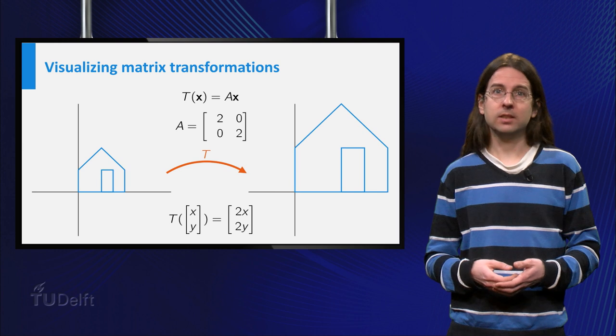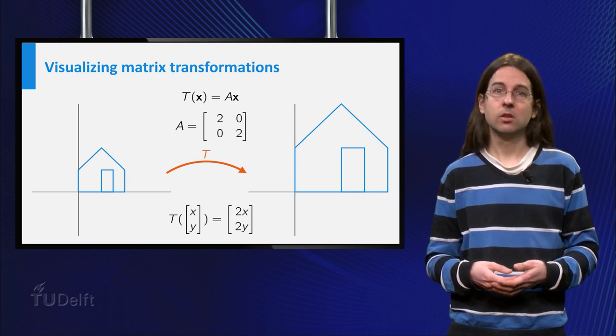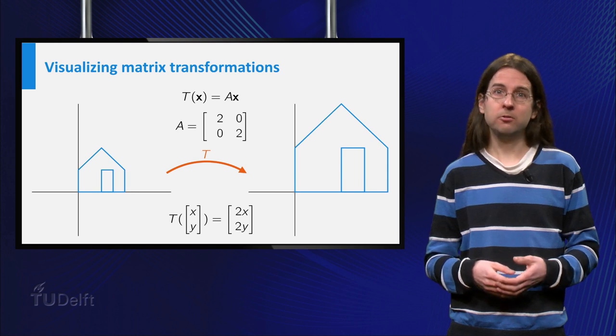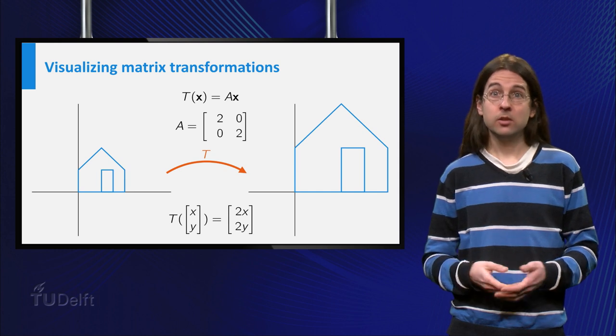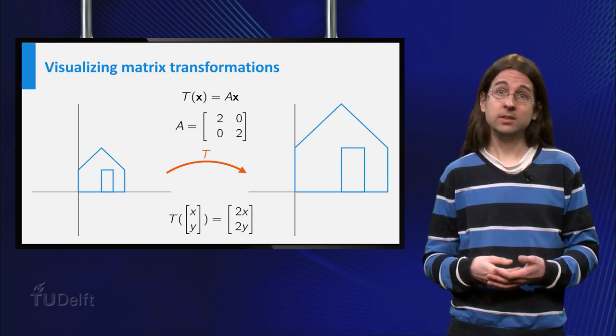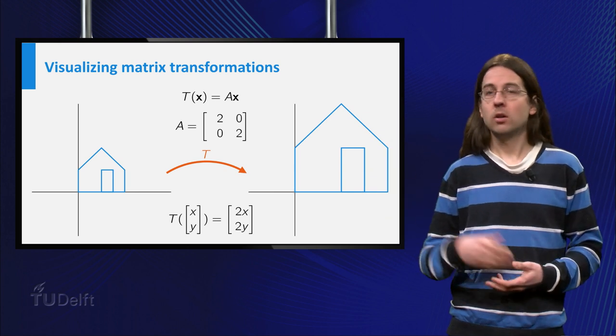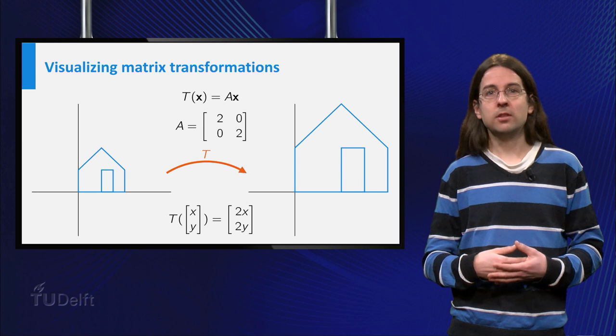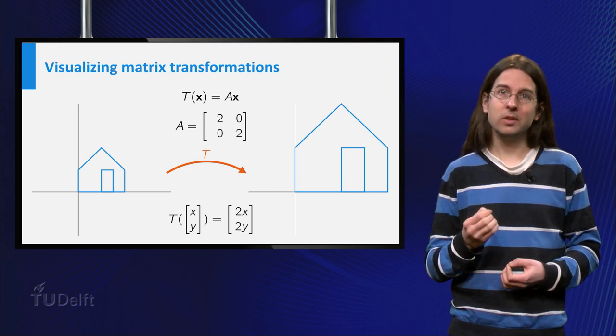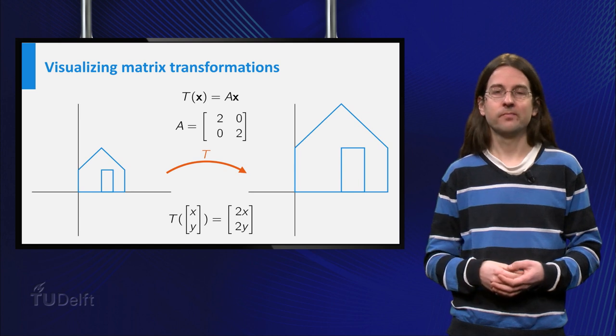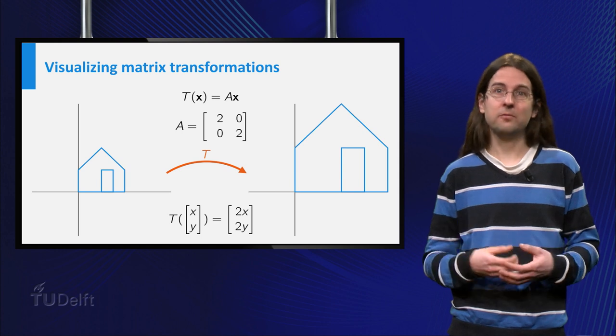Let us now try to visualize some of the matrix transformations we can make. Consider for example the matrix [[2,0],[0,2]]. This maps a vector v to twice v, thus it gives an expansion by a factor 2. On the slide we have applied the matrix transformation T(x) = Ax to each point of the picture of the house. You see that by doing so the picture of the house is stretched by a factor 2.